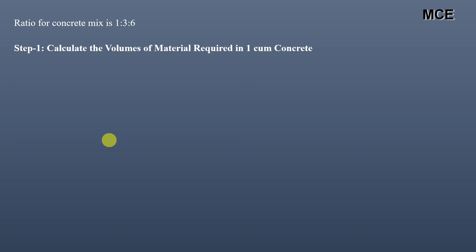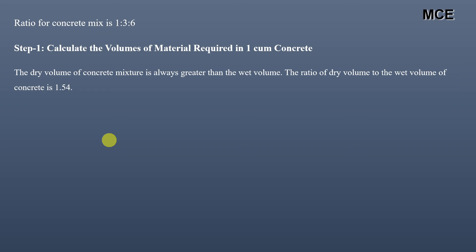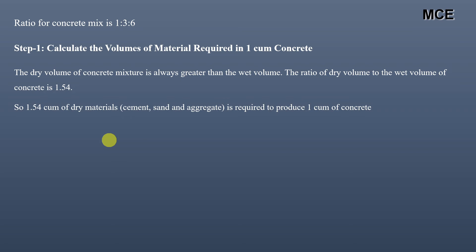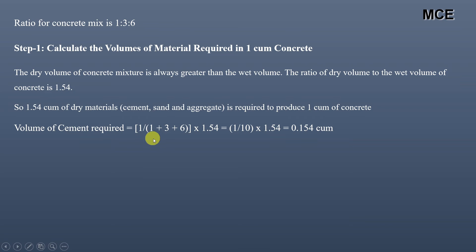Again, we find the volumes of material required. The dry volume to wet volume ratio is 1.54, so to make one cubic meter of wet concrete we use 1.54 cubic meters of dry materials. Volume of cement = (1 ÷ (1+3+6)) × 1.54 = 1/10 × 1.54 = 0.154 cubic meters of cement required to make one cubic meter of wet concrete.